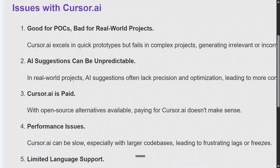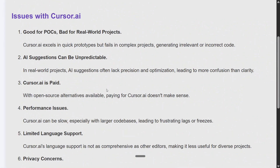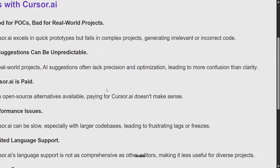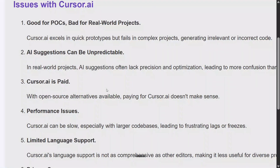AI suggestions can be unpredictable. They often lack precision and optimization, leading to more confusion than clarity. If you are going for a real-world project — for example, deploying code where optimizations are required, security flaws have to be checked, and debugging has to be done — AI can give you a baseline solution that might work for 90% of use cases, but not for all.